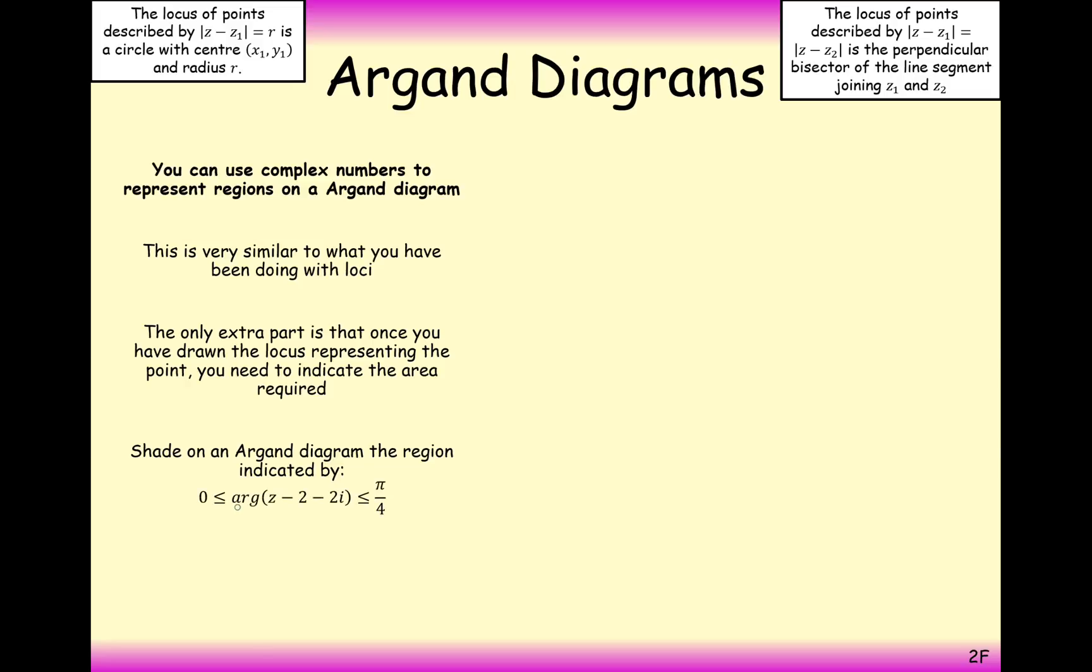Another type of question that we've seen previously is a half-line type question. Now, here we're looking for the argument starting at 2, 2 to be in between 0 and pi by 4. Now, they're both both got equal to signs on their inequalities, so it's going to be a solid straight line here.